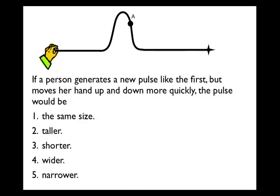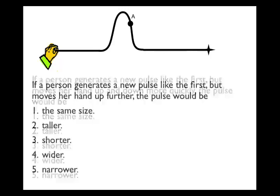If a person generates a new pulse like the first, but moves her hand up and down more quickly, what does that do to the pulse — same size, taller, shorter, wider, or narrower? It turns out the pulse is going to be narrower. If you move it up and down more quickly but to the same height, you keep the same amplitude, but going up and down more quickly takes less time, producing a narrower wave pulse. If you move your hand more slowly, the pulse gets wider.